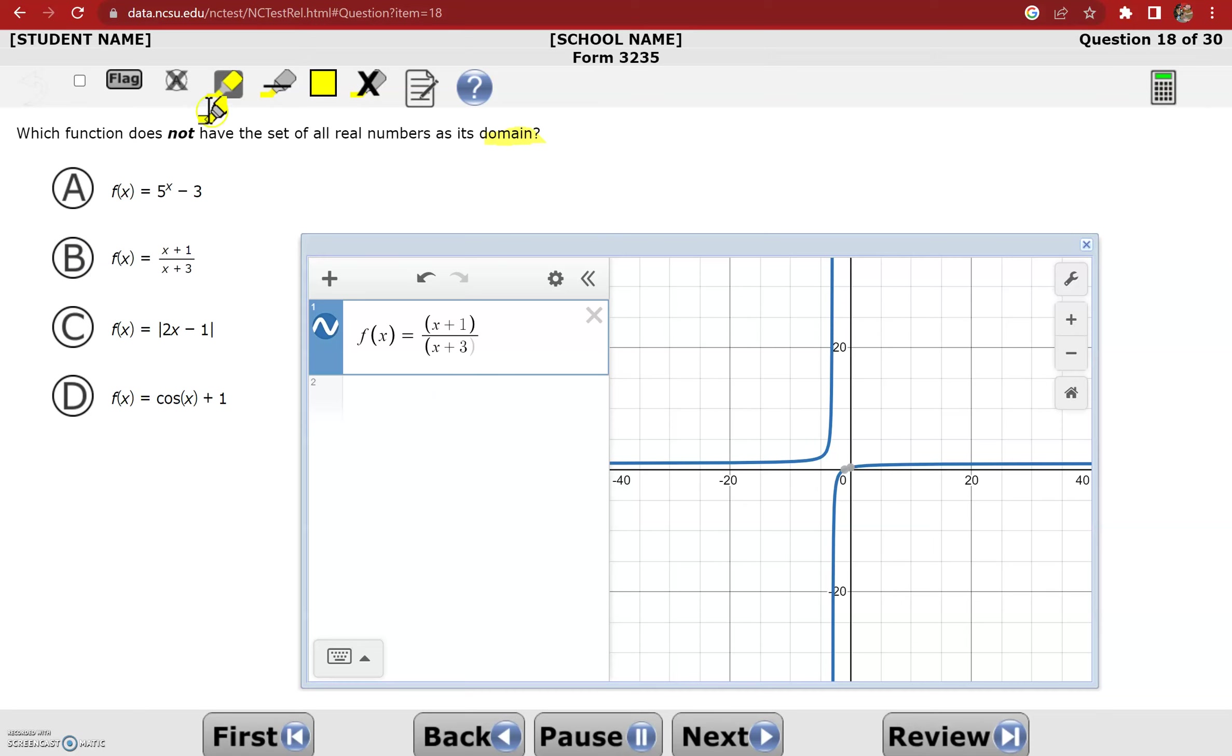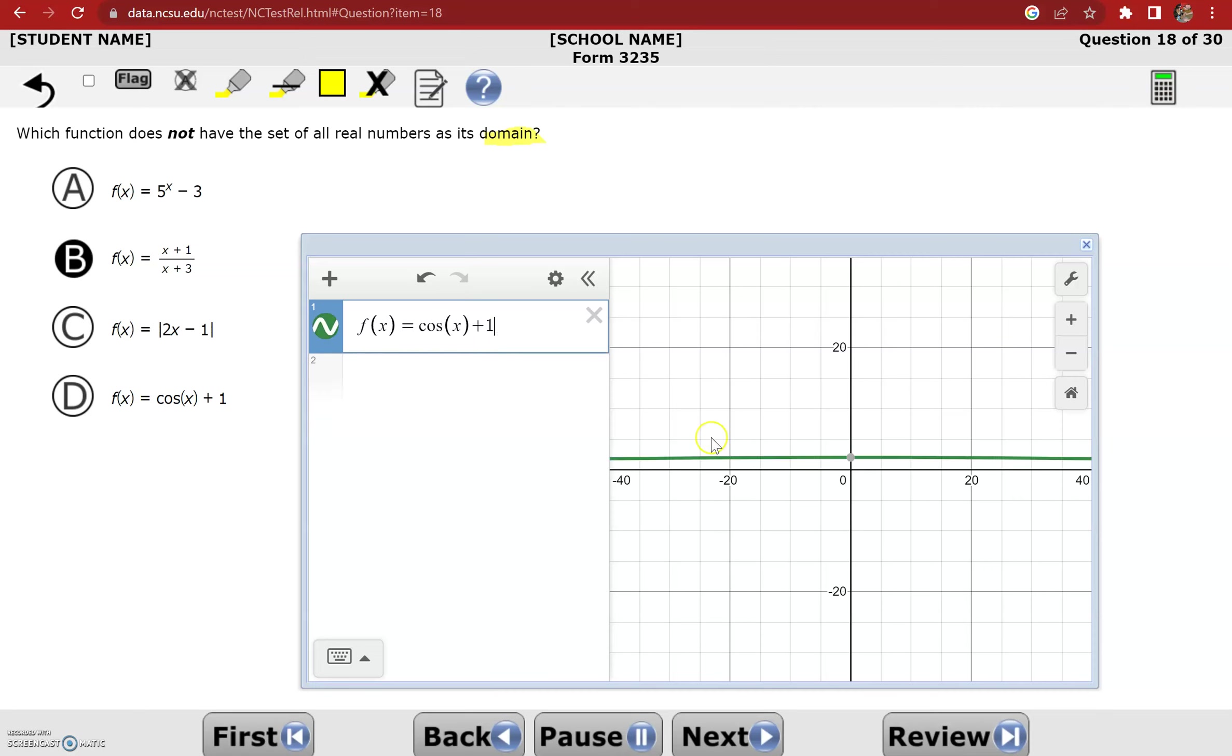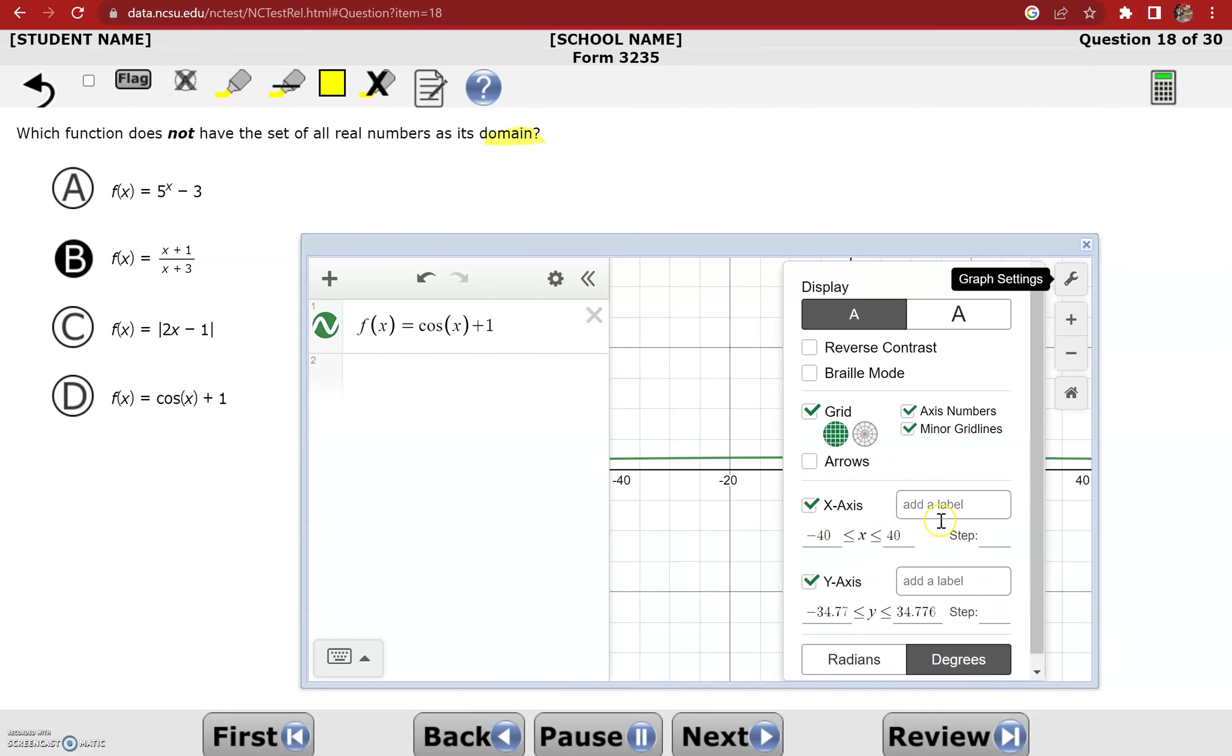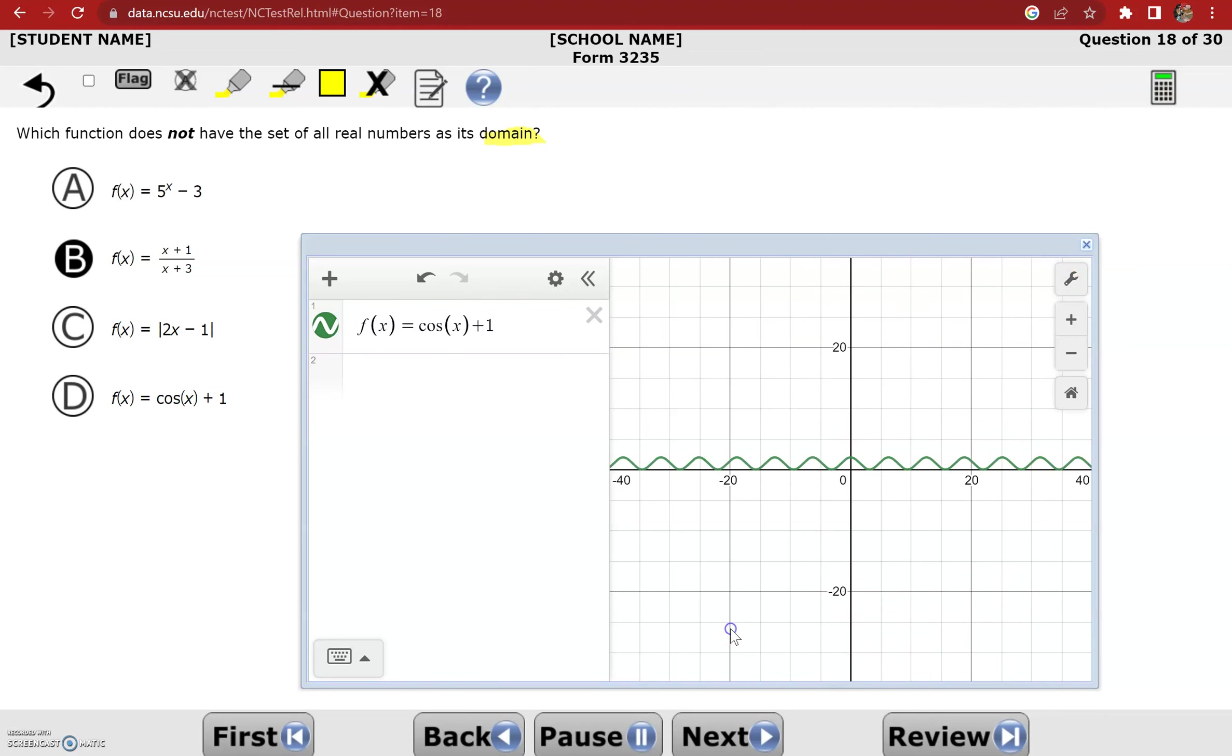I just want to go ahead and graph option D real quick to mention something about Desmos. If you know anything about cosine functions, which hopefully you do have seen at least, you know that they should be waves, curves, and this is pretty flat. So that's not what a cosine function is supposed to look like. You have to click on the settings and change it to radians to get Desmos to graph cosine functions in the way that you want, and that will come up later. But again, we can see that's continuous, so that's another reason why D is not the answer for this question.